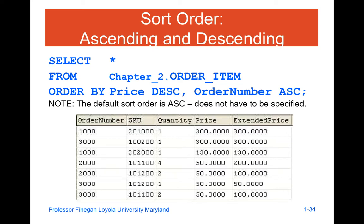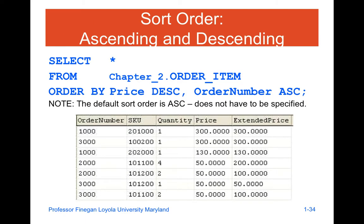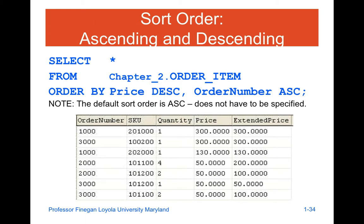The default is going to be ascending order. If you do descending order, you can specifically put in DESC. So going back to the previous review — one query does ORDER BY order number, and the other does ORDER BY price first and descending. In the first, the order number was going up; in the second, it's not concerned with order number but with price, and the price is going down.